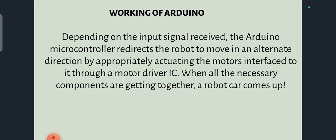The major working of Arduino is: Arduino gives a result to the input that we are giving. Depending on the input signal it receives, the Arduino microcontroller redirects the robot or device to move in an alternate direction by accurately controlling the motors interfaced to it through a motor driver IC. When all the necessary components come together, the robot car or electronic process for that particular device will be activated.